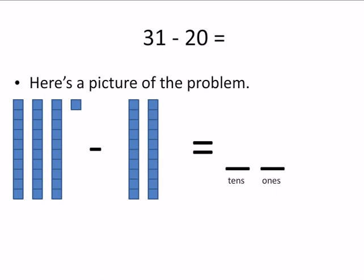So that's 31 minus 20. That's two stacks of 10. 10, 20.